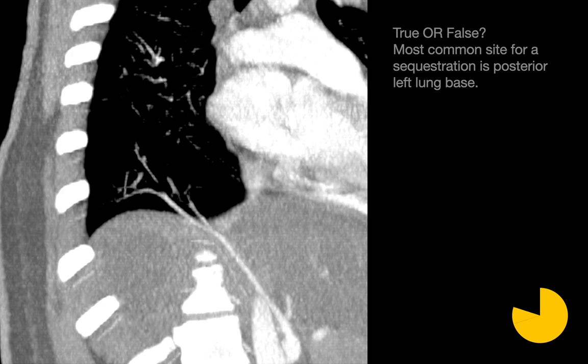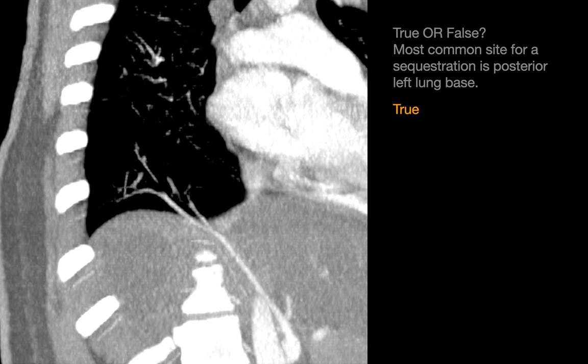True or false: the most common site for sequestration is the posterior left lung base? True. Half of intralobar sequestrations present after age 20 — young adulthood — whereas over half of extralobar sequestrations present before six months. Intralobar sequestrations usually present as recurrent infection, whereas extralobar sequestrations rarely present as infection and more likely present during workup for associated congenital anomalies.